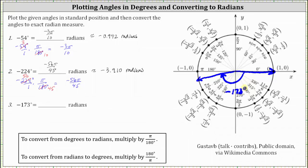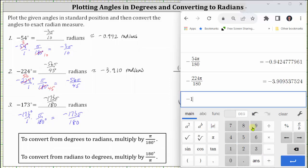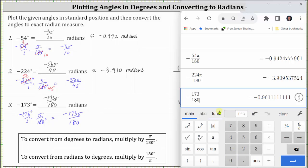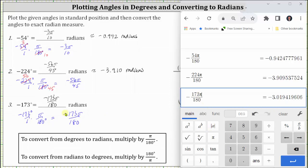To convert to radians, we multiply by pi divided by 180 degrees. In this case, the only common factor between 180 and 173 is one, and therefore nothing simplifies, other than the units of degrees simplifying out. The exact measure in radians is negative 173 pi divided by 180 radians. Let's verify in the calculator that this fraction doesn't simplify. We enter negative 173 divided by 180, and if we click the convert to fraction button, notice how we get the same fraction that we entered. If we include the pi, we now know negative 173 pi divided by 180 radians is approximately negative 3.019 radians.